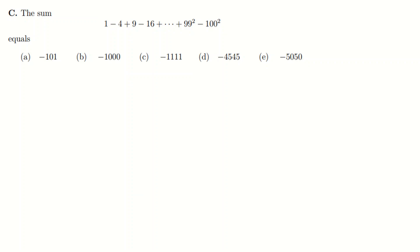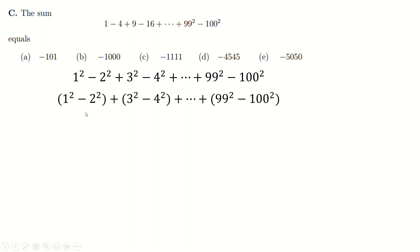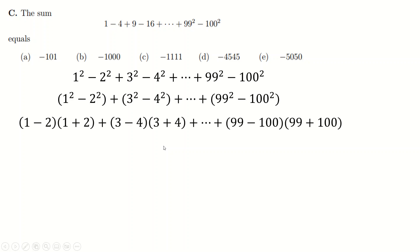Question C is a lovely question. Shout out to Jay Winfield for sending what I think is the best solution. There are hundreds of ways to do it, but the prettiest solution is to notice these are all square numbers. If you group them, you've got a load of differences of squares: one squared minus two squared, three squared minus four squared, and so on. Factorize all of those using the difference of two squares formula.